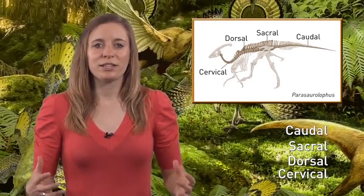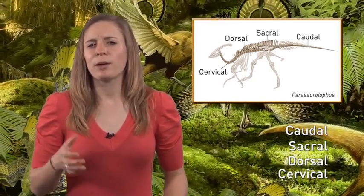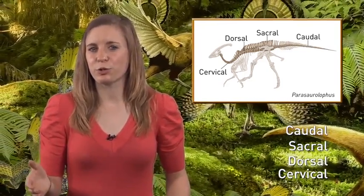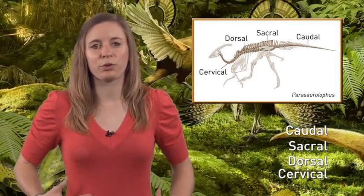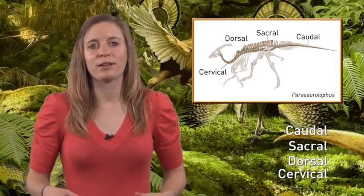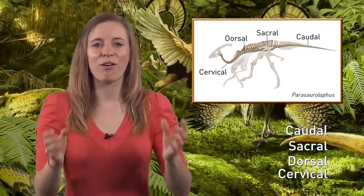Ribs articulate with the vertebrae. Mammals are unusual because we don't have ribs in the rear portion of our body, but dinosaurs had ribs all the way to the pelvis. Another difference between mammals and dinosaurs is the presence of gastralia, or belly ribs, which aren't found in mammals. The shapes of vertebrae represent adaptations for flexibility and posture.